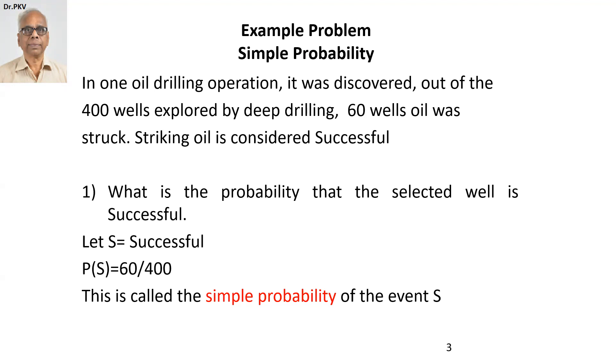I do not worry about simplification. You can write it as 6 by 40 or 3 by 20. That's immaterial. But the basic definition, favorable cases to the total number of cases, is the probability definition, which is pretty simple. In this case, it's equal to 60 upon 400, signed, sealed and delivered, the definition of probability with an example.